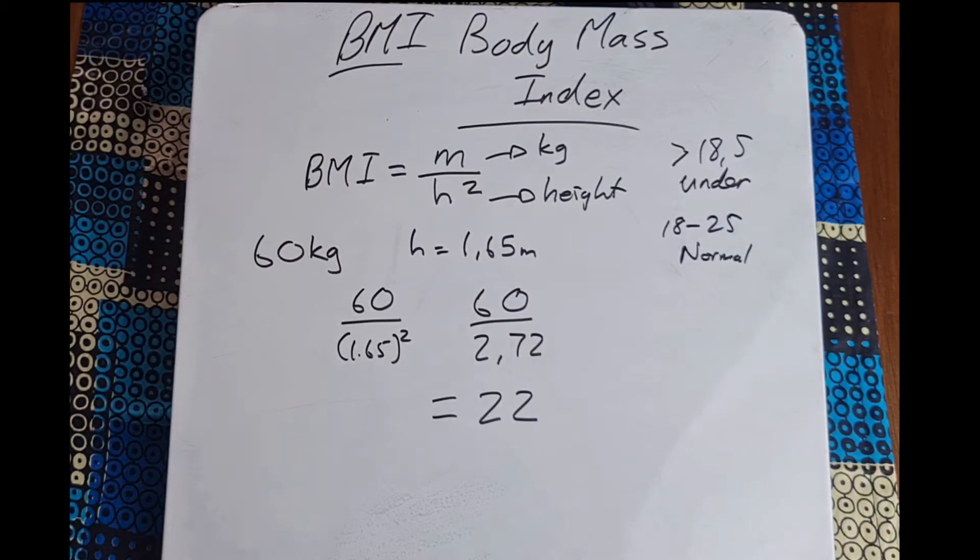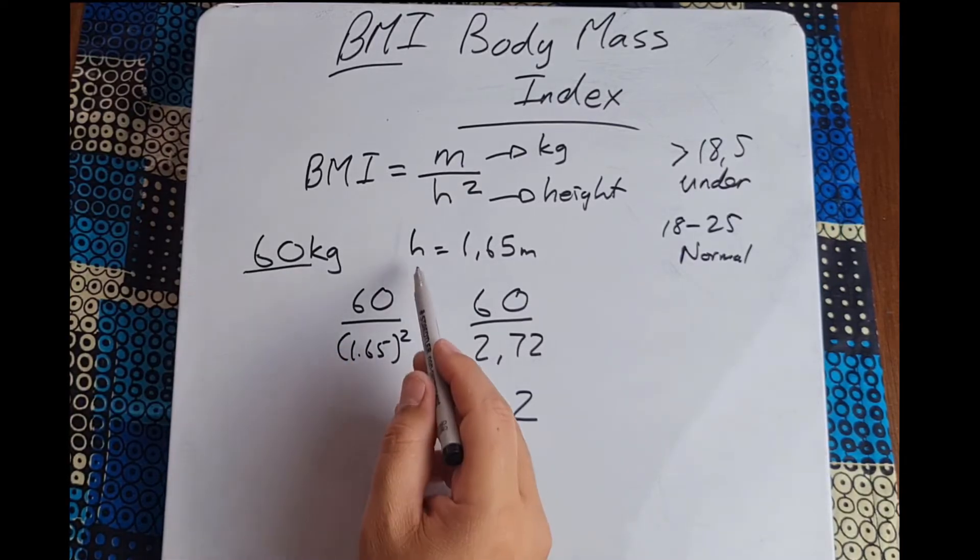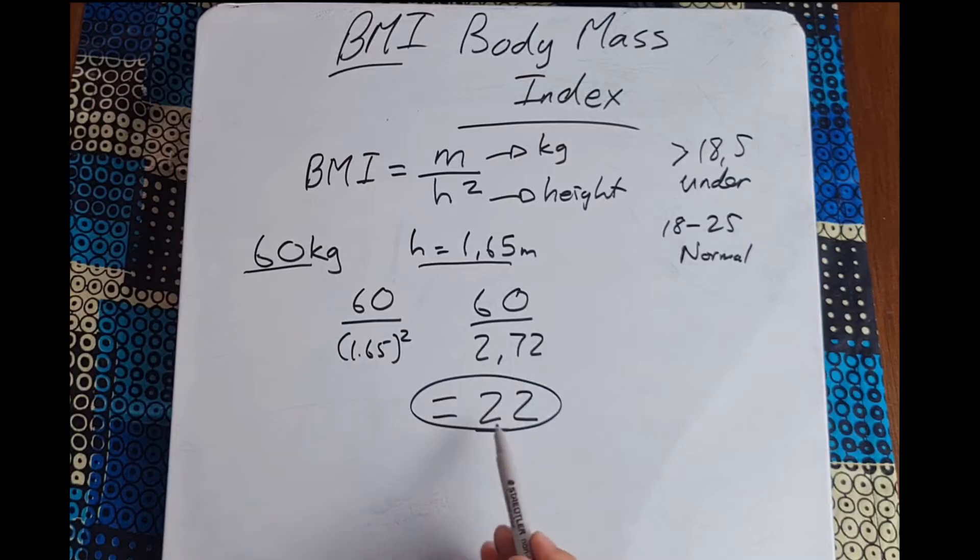Okay, so you can see for this individual who is 60 kilograms in weight, is 1.65 meters tall, he's scoring 22 which is within the normal range.